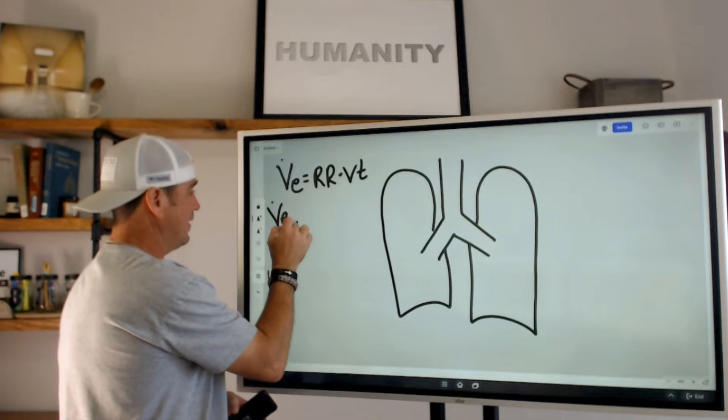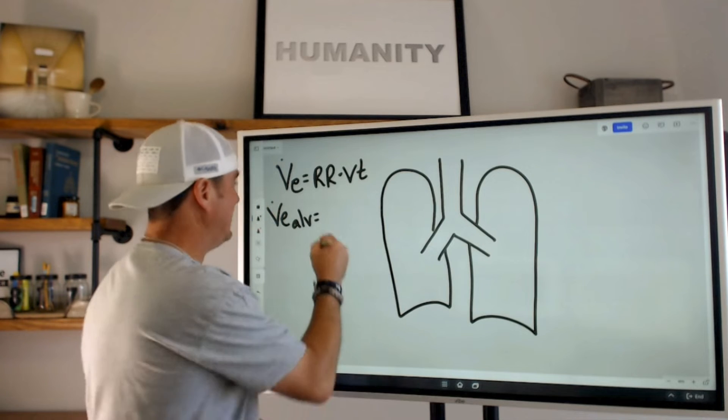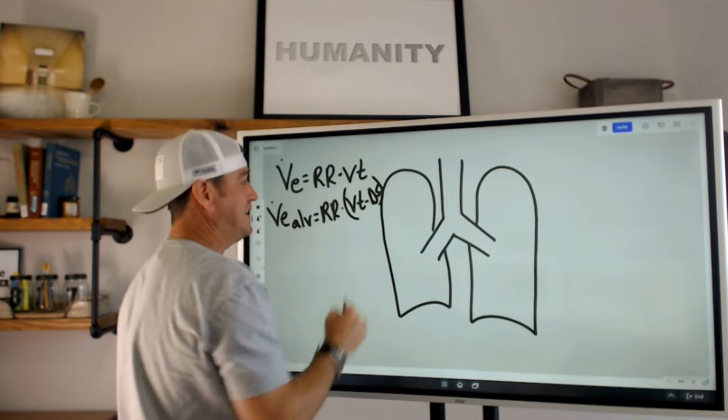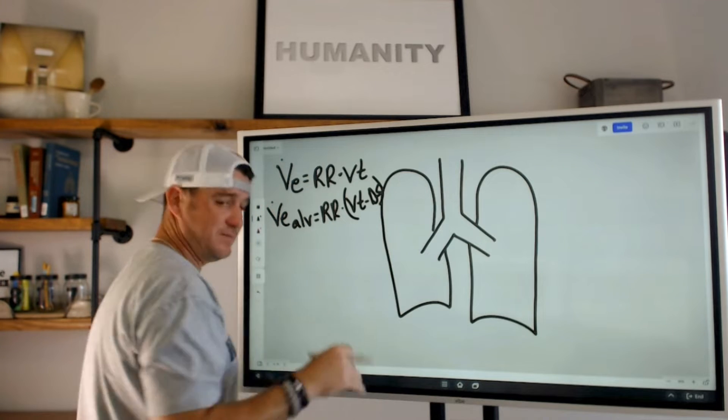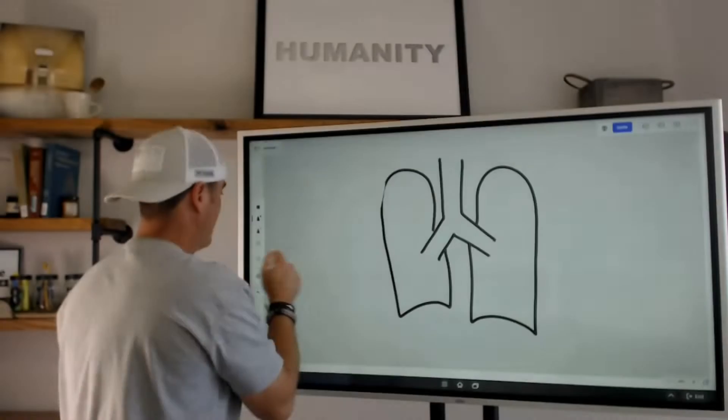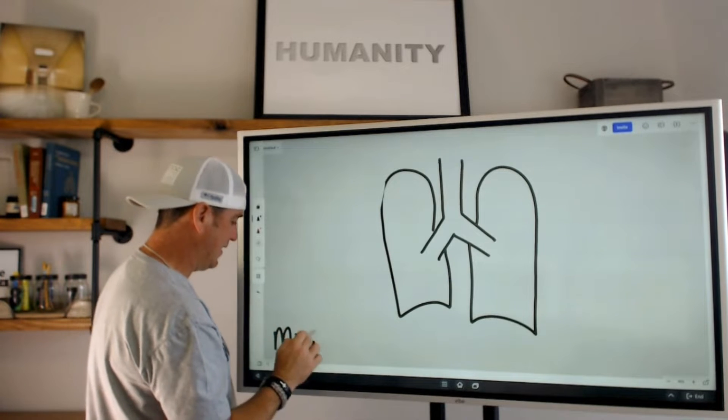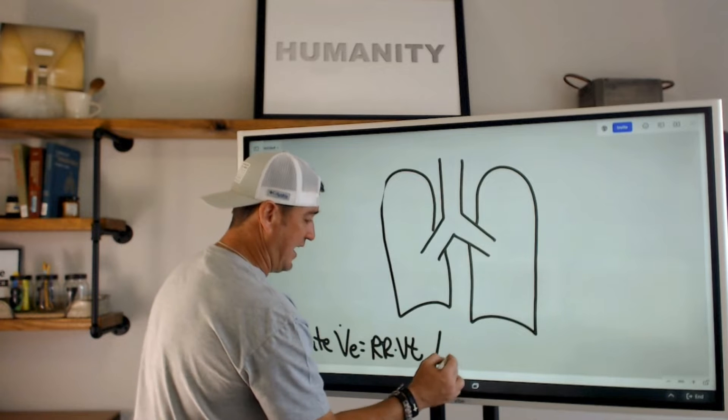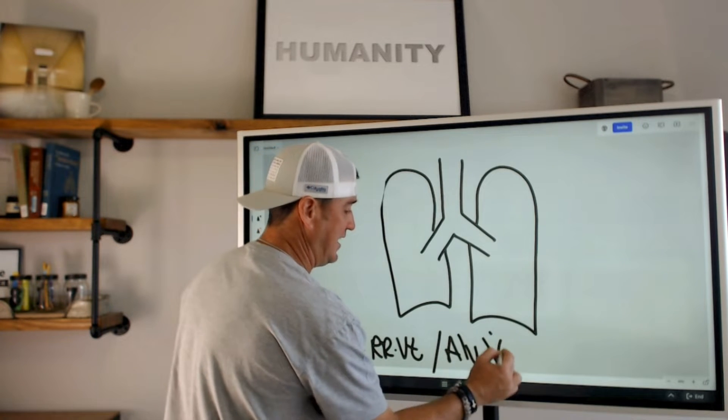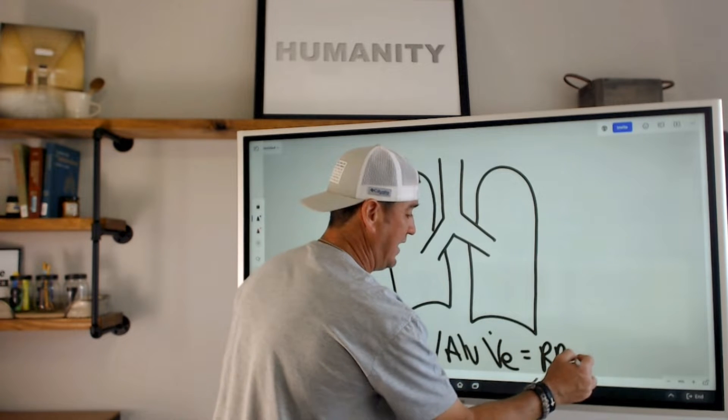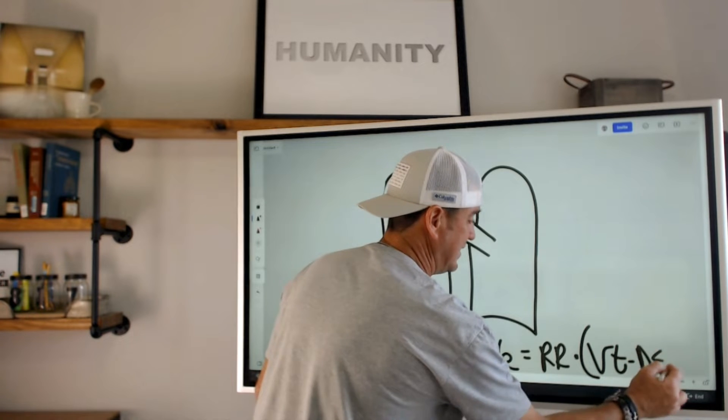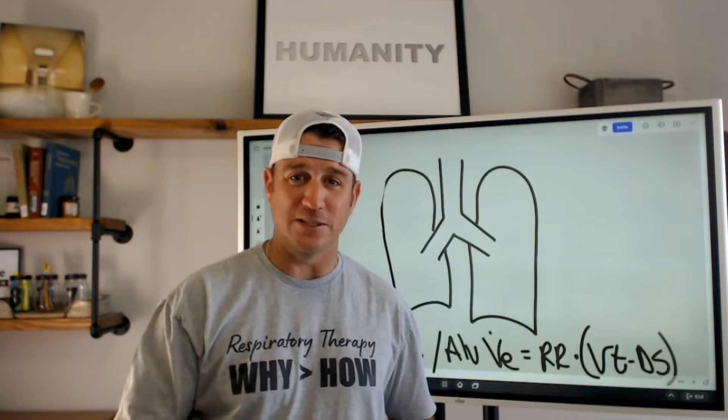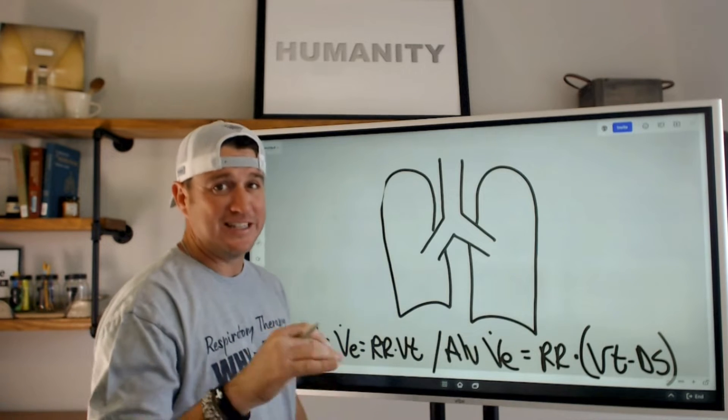And we know that formula is VE equals respiratory rate times tidal volume. Now that all makes sense. So what we're really talking about now when we start talking about alveolar VE, this is VE alveolar. Well, what is that? It's respiratory rate times tidal volume minus dead space. That's what you need to know. So let's talk about what that means, because what we're going to soon learn here is that all minute ventilation is not the same.